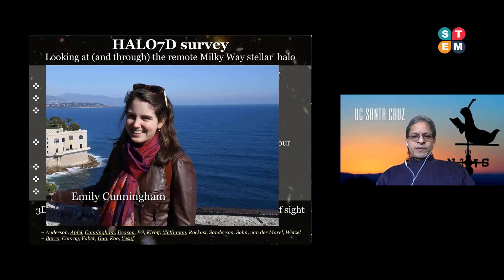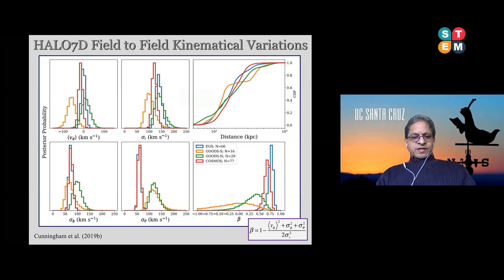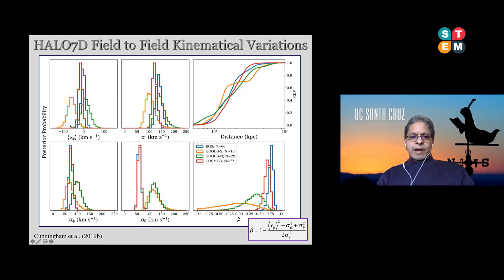This is Emily Cunningham — this was part of her PhD thesis. The Halo 7D survey was really started while Alice Deason, now a professor at Durham, was a postdoc at UC Santa Cruz. One of the main results from Emily Cunningham's second paper in 2019 was measuring three-dimensional kinematics of Milky Way halo stars in four fields, color-coded blue, orange, green, and red. We measure their mean rotation speed in phi — the average of V-phi — and we measure the dispersion in the radial, phi, and theta directions, theta being the elevation angle.